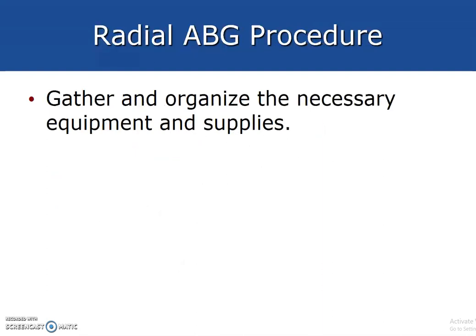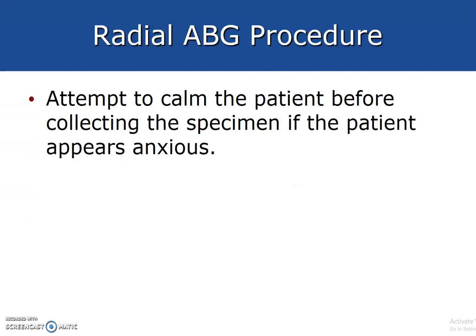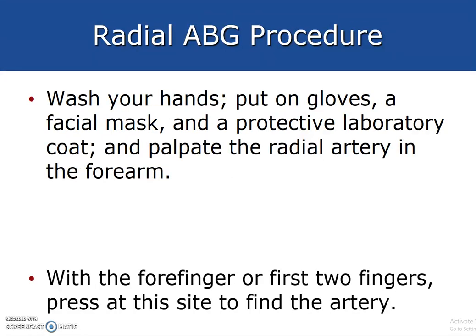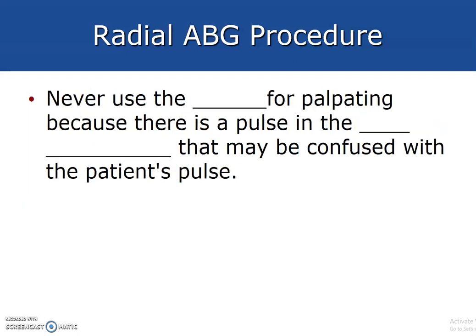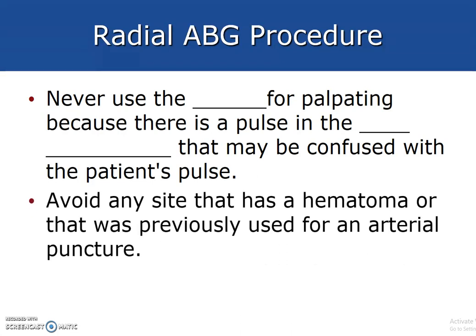For the radial ABG procedure, the patient must be in a stable state for at least 30 minutes prior to the procedure. We choose the non-dominant hand as our best choice so the patient doesn't have to use that hand immediately after the procedure. Never use the thumb for palpating because it has a pulse that may be confused with the patient's pulse. Avoid any site that has a hematoma or was previously used for arterial puncture.